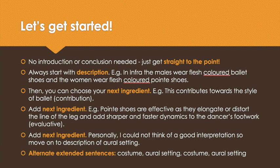Finally, you should add your next ingredient. For the question that we have been looking at, I could not think of a good interpretation, so you should move on to the description of the aural setting. When writing your extended sentences, you need to alternate between the two aspects that you were discussing. For example, your first extended sentence is on the costume, your second on the aural setting, your third on the costume, and so on. This will ensure that you cover both aspects in case you run out of time in your exam.